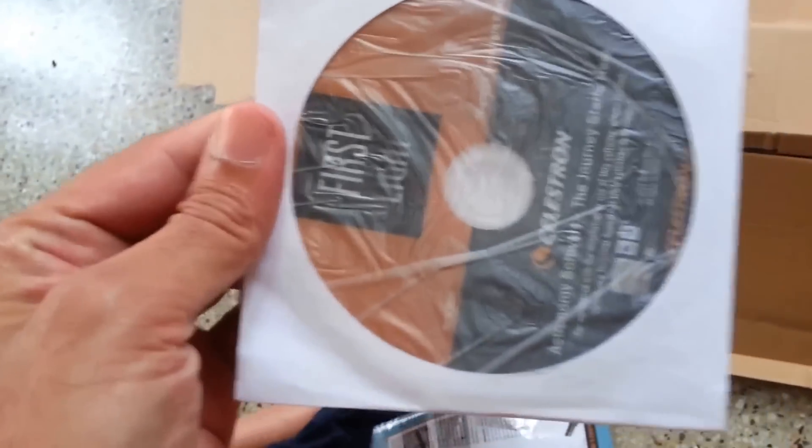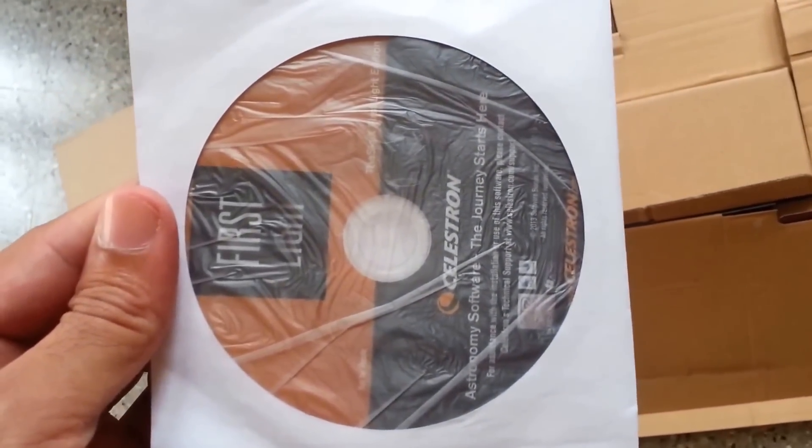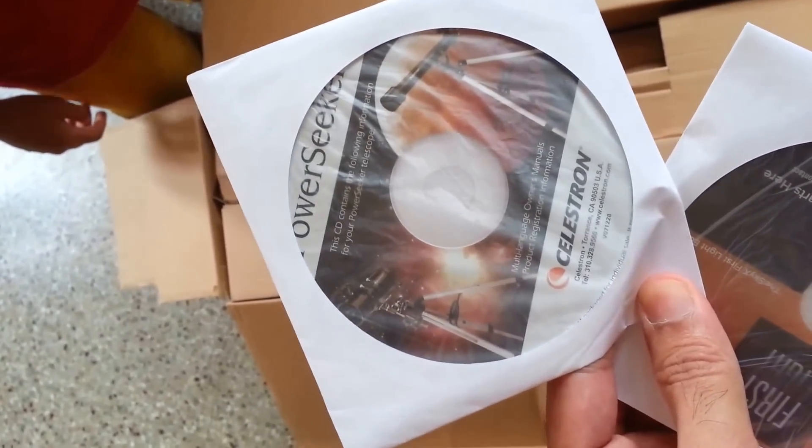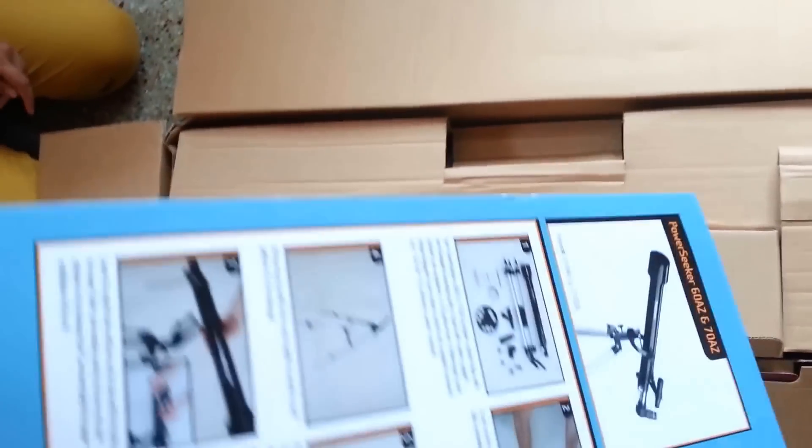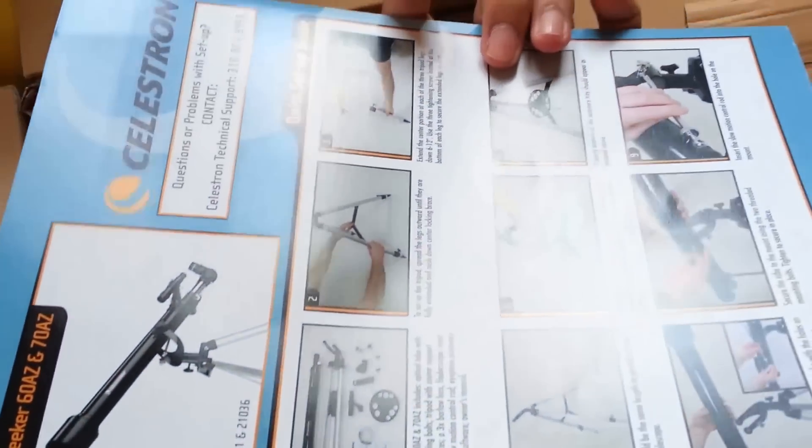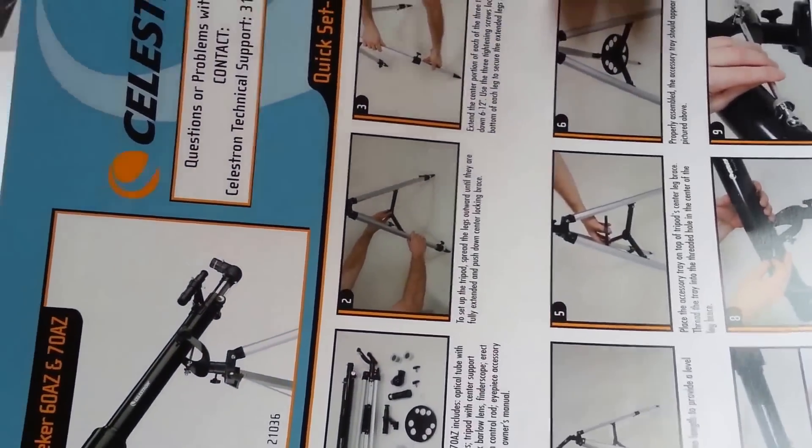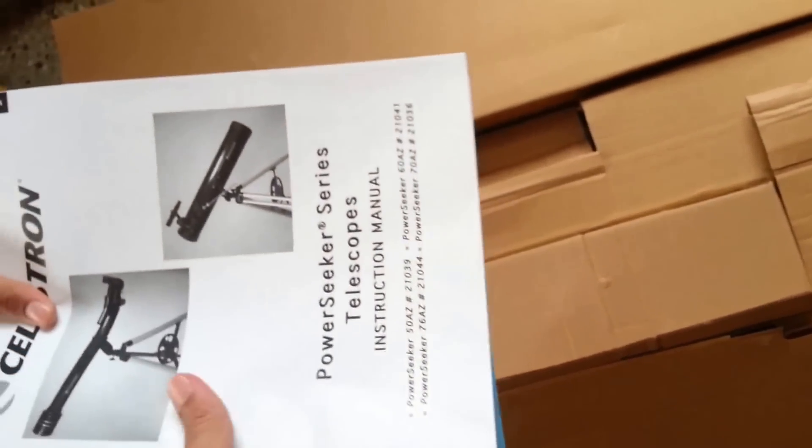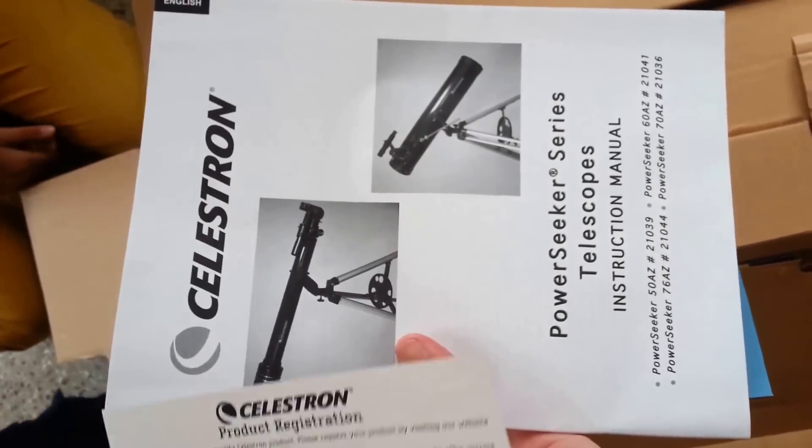So our junior master is removing the manual and the CDs. I think it contains the CD for the manual. This is the first light edition. This is the software for Nature Astronomers. We got one more CD. I think it is the manual for Celestron Power Seeker. This is the instruction manual for Celestron Power Seeker series.